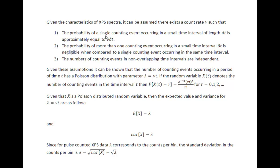The first condition: the probability that a single counting event occurs in a small time interval delta t is approximately equal to the count rate times the interval of time. In other words, counts per second times time gives us the number of counts we ought to expect.